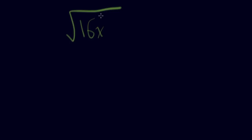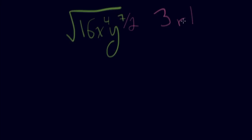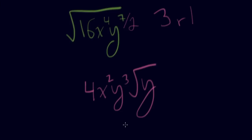Now the square root of 16x to the fourth y to the seventh. The square root of 16 is 4. The square root of x to the fourth is x squared. For y to the seventh, divide by 2: that gives 3 remainder 1, so three y's go on the outside. My final answer is 4x squared y cubed root y.